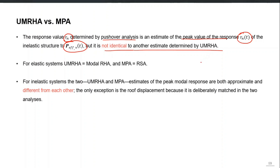For elastic systems, UMRHA is the same as classical modal RHA, and MPA is the same as response spectrum analysis. For inelastic systems, both methods become approximate and differ from each other. Only the roof displacement U_rN is determined using the same expression in both MPA and UMRHA procedures; all other responses can be different because they are both approximate and based on different assumptions.